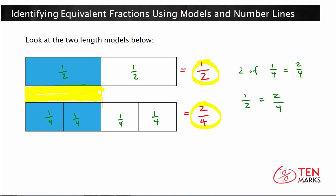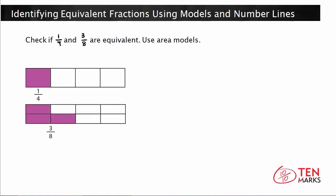Let's try a problem together to understand this concept better. Check to see if the fractions one fourth and three eighths are equivalent — use area models. We've got one rectangular piece divided into four equal parts, each part being one fourth, and we've shaded in just this one fourth in purple. In the bottom model, you have eight equal parts, and three of these equal parts are shaded to represent the fraction three eighths.